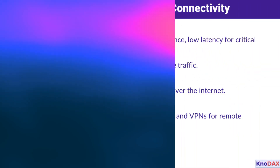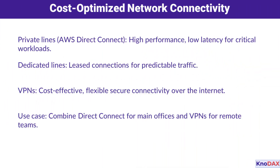Now let's talk cost optimization. AWS offers several approaches to strike the right balance between performance and budget. Private lines like AWS Direct Connect provide low latency and high throughput, while dedicated leased lines are great for predictable traffic. VPNs offer flexibility and cost-effectiveness for secure internet-based connectivity. For a hybrid setup, you could combine Direct Connect for your main office and VPNs for remote teams, maximizing efficiency without compromising performance.